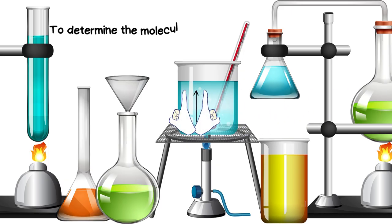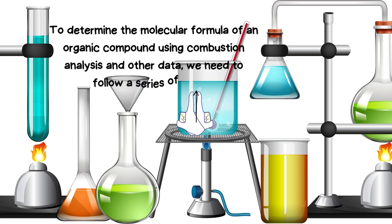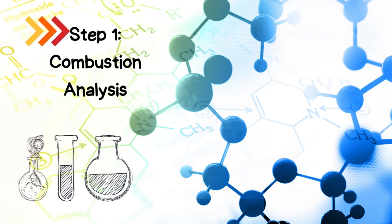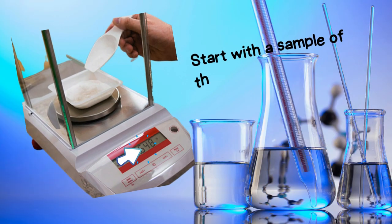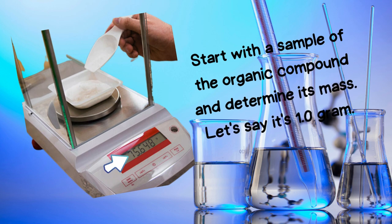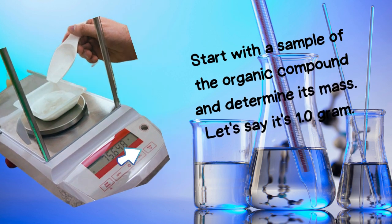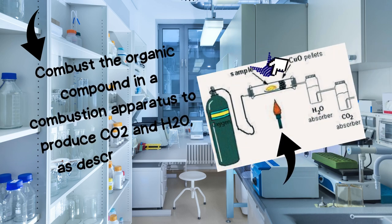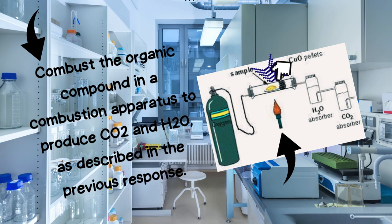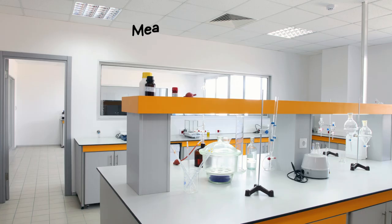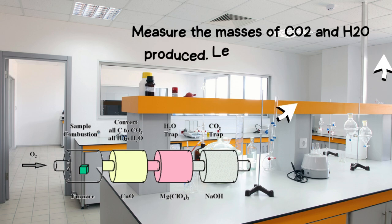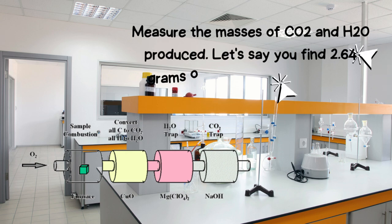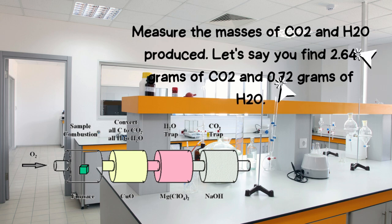To determine the molecular formula of an organic compound using combustion analysis and other data, we need to follow a series of steps. Step 1: Combustion Analysis. Start with a sample of the organic compound and determine its mass — let's say it's 1.0 gram. Combust the organic compound in a combustion apparatus to produce carbon dioxide CO₂ and water H₂O. Measure the masses of CO₂ and H₂O produced. Let's say you find 2.64 grams of CO₂ and 0.72 grams of H₂O.